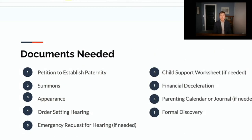In a paternity case, there are several documents you're going to see. There's the initial petition to establish paternity, and also documents like an emergency request for a hearing when emergencies arise that require going to court sooner to protect the child. There's also child support that would need to be calculated, a parenting time journal to document custody and parenting time, and formal discovery — the process of getting information about the other party's income or other things about the child.